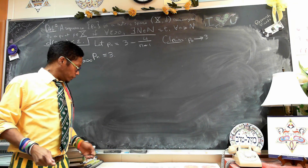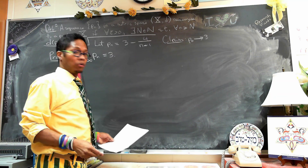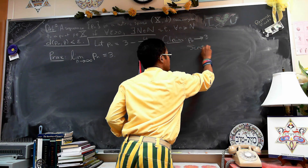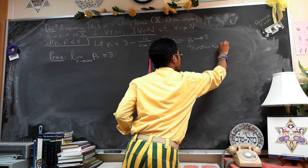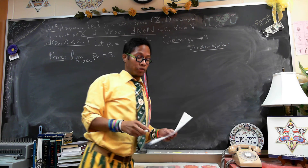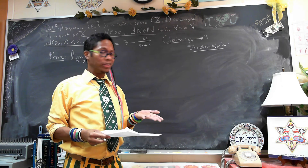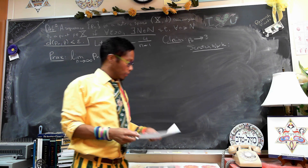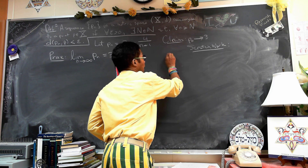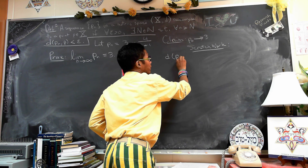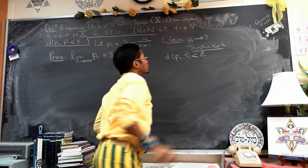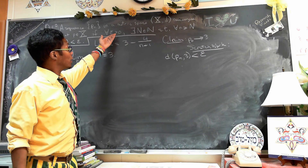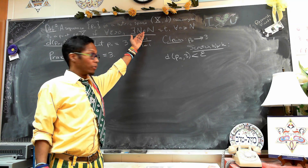To do this, first we need a little bit of scratch work — put the scratch work off to the side. You must always do some scratch work before these proofs but never turn it in as scratch work. The scratch work is just there to give you some idea of how to write the formal proof. Our desire is to have the distance from P_n to 3 be less than epsilon. Our goal with all these proofs is that we're given epsilon and we want to exhibit the capital N that works.